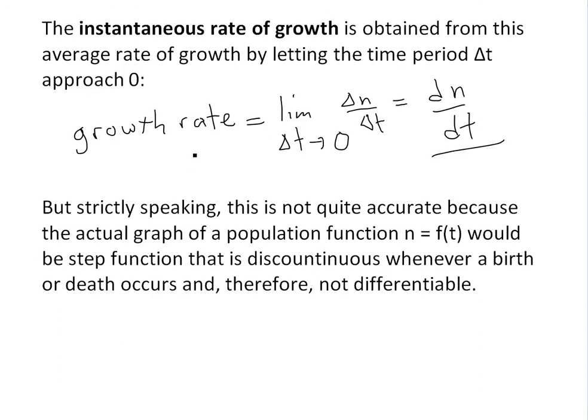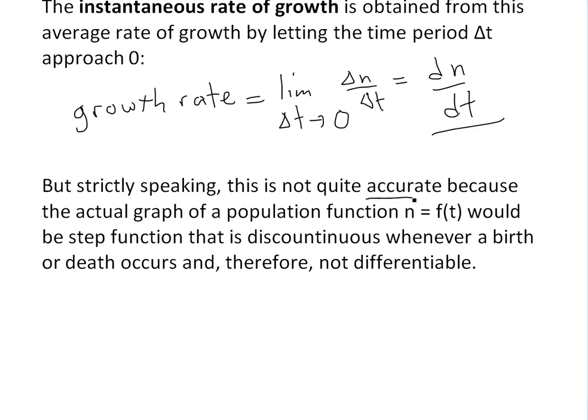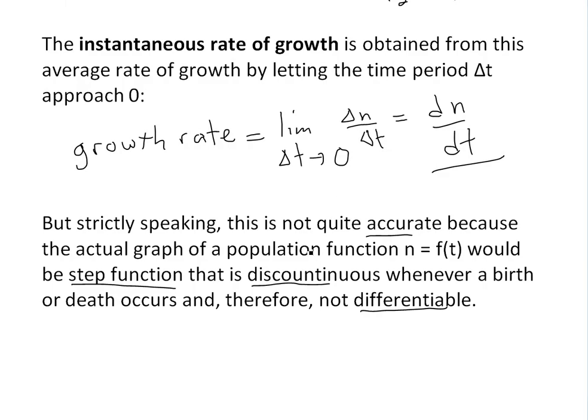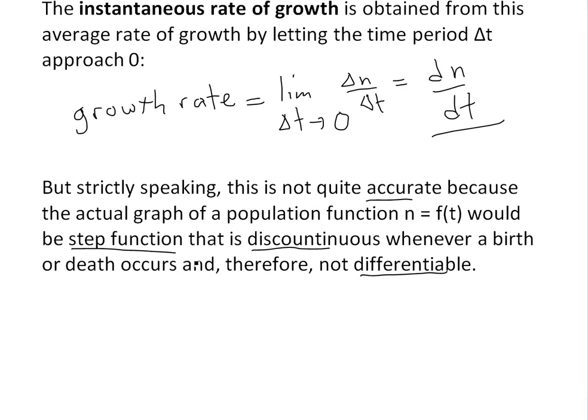The one problem of writing the instantaneous rate of growth as a derivative is that, strictly speaking, this is not quite accurate. The actual graph of a population function n = f(t) would be a step function that is discontinuous whenever a birth or death occurs, and therefore not differentiable. You're not going to have a smooth curve of people or plants giving birth or dying out because there's no such thing as continuous birth of a population. It's going to be flat, and all of a sudden there's going to be a birth, it goes up. It's going to be discontinuous.